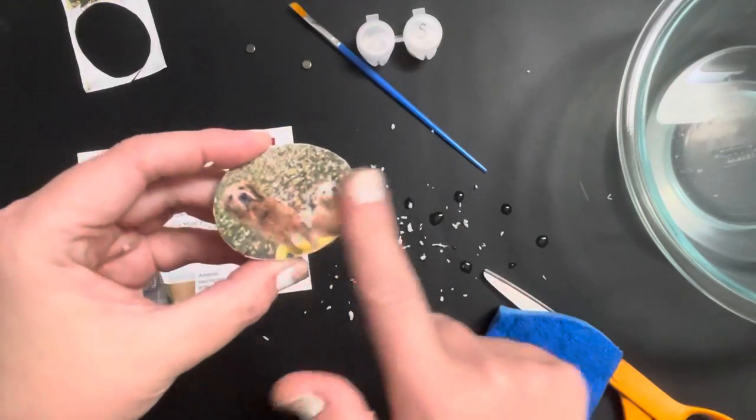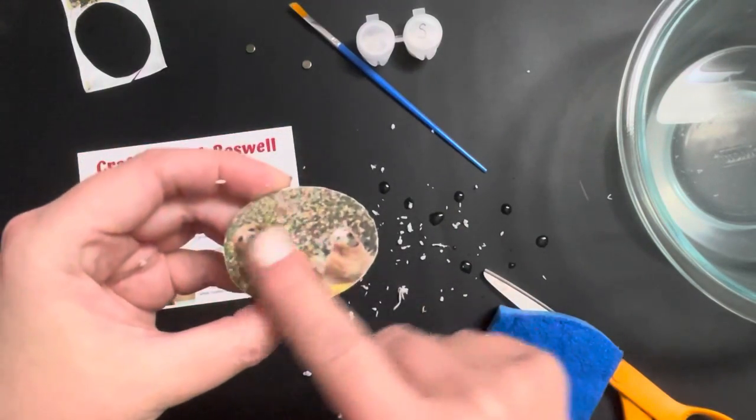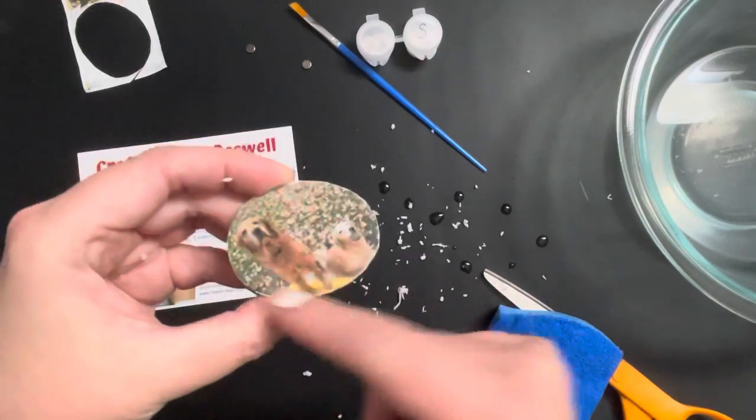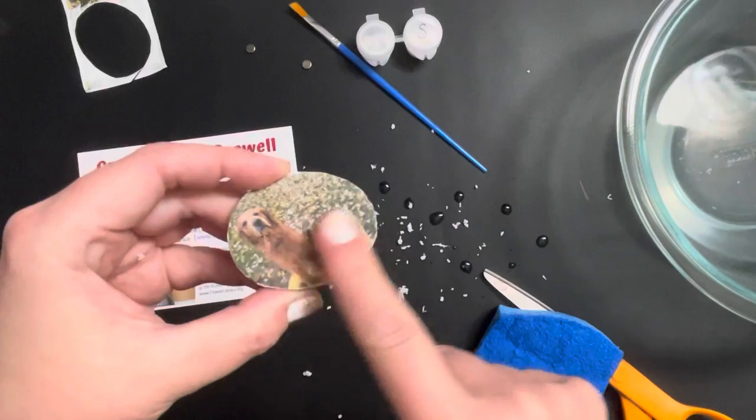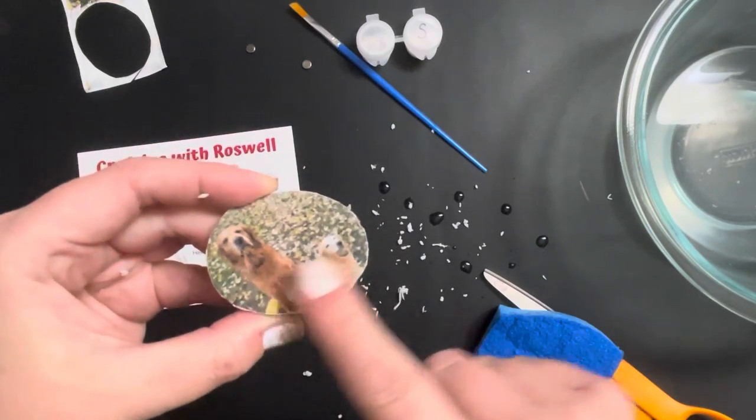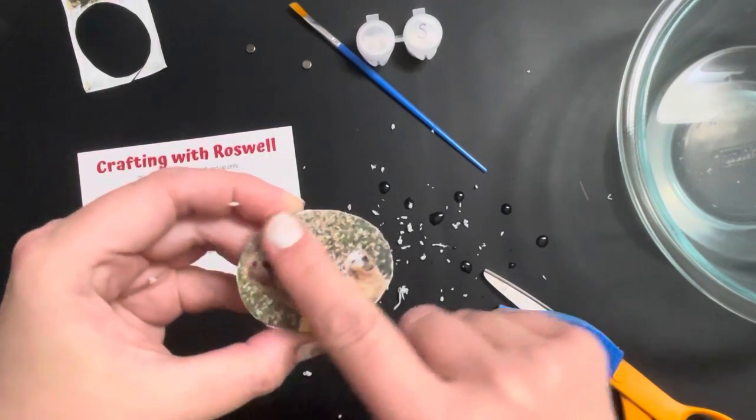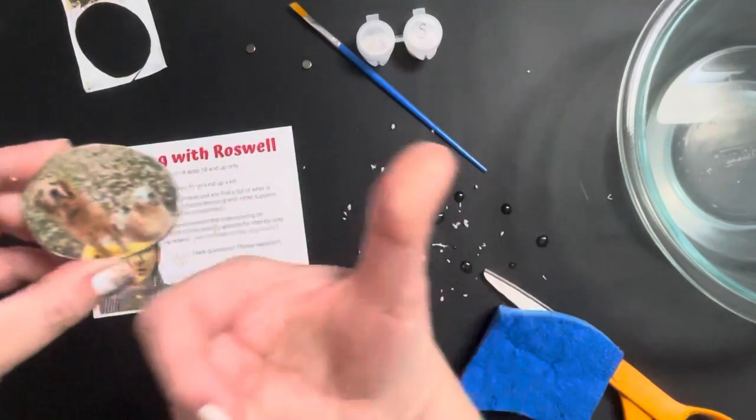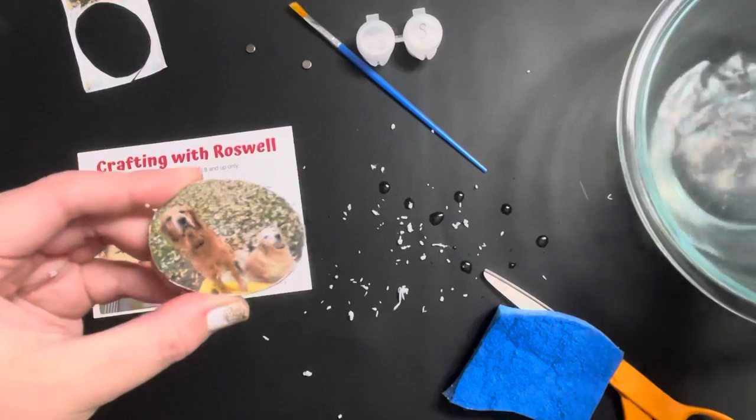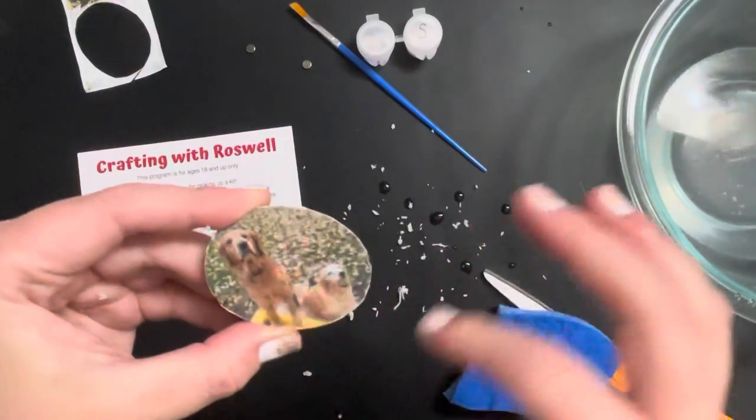You can just use your fingers to rub away anything that might feel loose on the surface of your wood slice. You'll feel the little pebbles of the paper and you'll see them on your fingers. Just kind of rub those away.